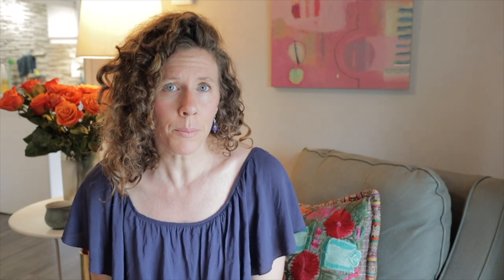What makes a reflector unique is, first of all, they're the most rare of the four Human Design types. They make up only 1% of the planet, so for every 100 people there is only one reflector, and this is amazing in terms of their role because the reflector is really here